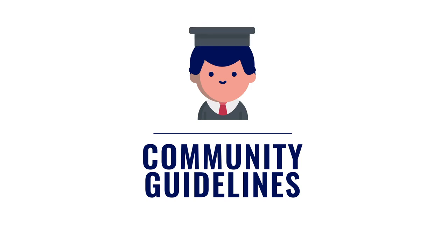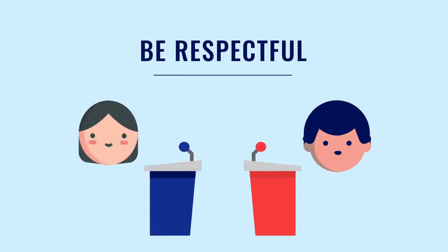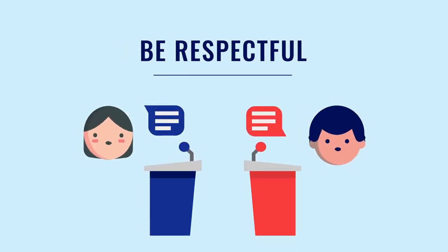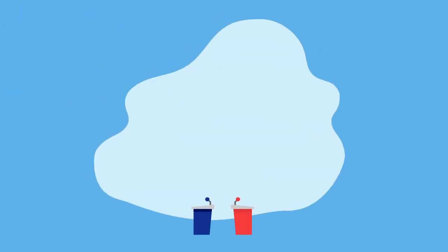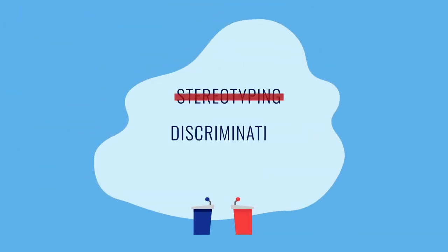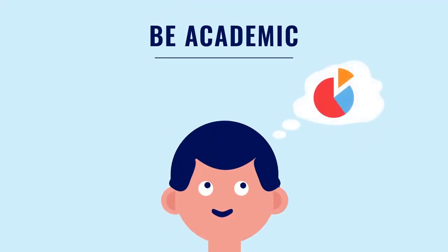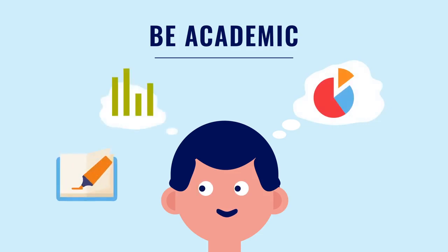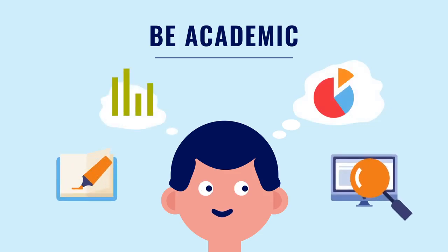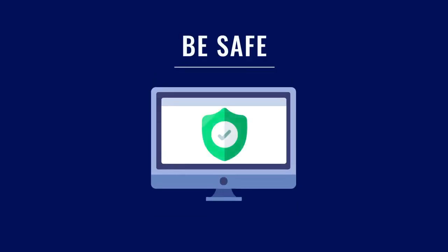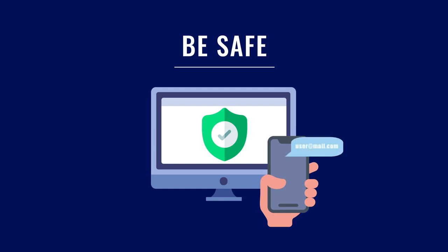Here's how to do that. An academic, informed debate is respectful of each other's arguments using civil discourse. Avoid negativity such as stereotyping, discrimination, or inflammatory remarks. Give some thought to your arguments and avoid logical fallacies. Cite evidence such as sources and data to support your arguments. Make sure you follow personal online safety rules and do not share personal details such as your email address or phone number.